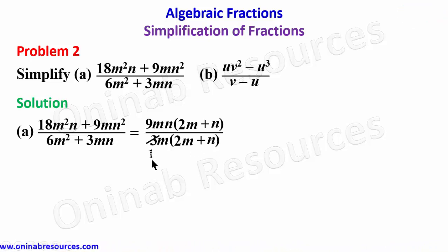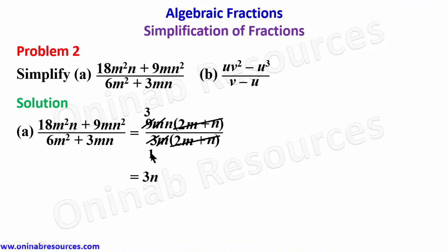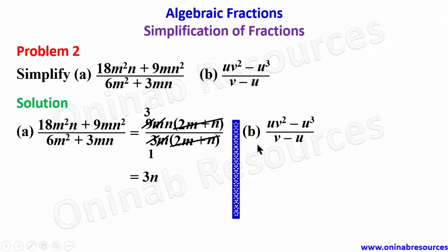Now we cancel: the 3 from the denominator goes into the 9mn giving 3n, and (2m + n) cancels with (2m + n). We are left with 3n at the numerator and 1 at the denominator, so the simplified answer is 3n.